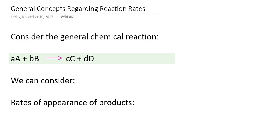Hello everyone. In this first pre-lecture tutorial for chapter 14, we're going to be taking a closer look at chemical reaction rates. This is very much centered on the second section of chapter 14. I'm leaving it to you to read the first section regarding factors that affect chemical reaction rates, and we'll discuss that section tomorrow. I wanted to give you a more in-depth look at rates of appearance and rates of disappearance of species in chemical reactions, and how we can relate those individual rates to the overall reaction rate.